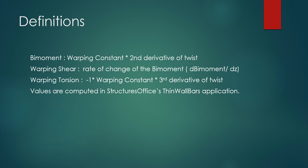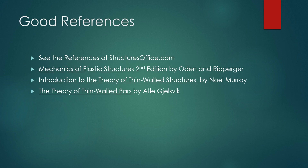You can get these values out of the Thin-Wall Ballers application from Structures Office. There are two papers at StructuresOffice.com on torsion of open and closed sections — PDF files you can download. Some textbooks: Mechanics of Elastic Structures by Odin and Rippinger is a very good overview. Also Introduction to the Theory of Thin-Wall Structures by Murray, and The Theory of Thin-Wall Bars by Jelsvik.